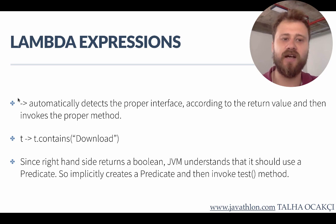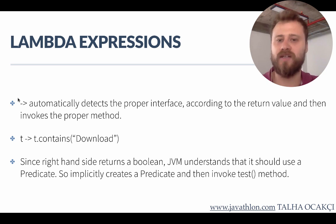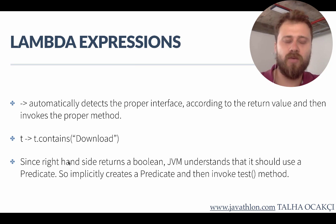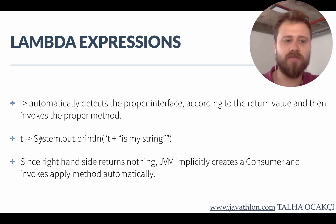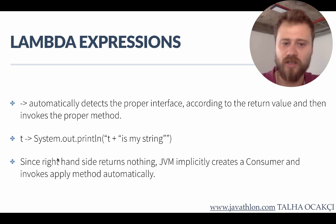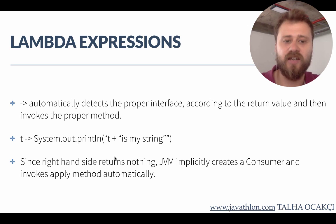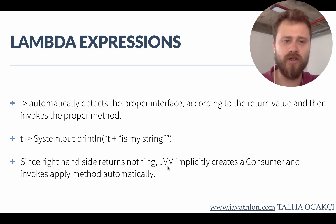We will use these lambda expressions inside streams, and you will see that stream functions will directly invoke the proper functional interface abstract methods. For now, just know that we may refer to a lambda expression with a functional interface reference. Here we have an input T — after the lambda expression we are just printing this value to console. This is a traditional consumer because the consumer does not return anything after getting an input. That's why JVM understands this lambda expression corresponds to a consumer.